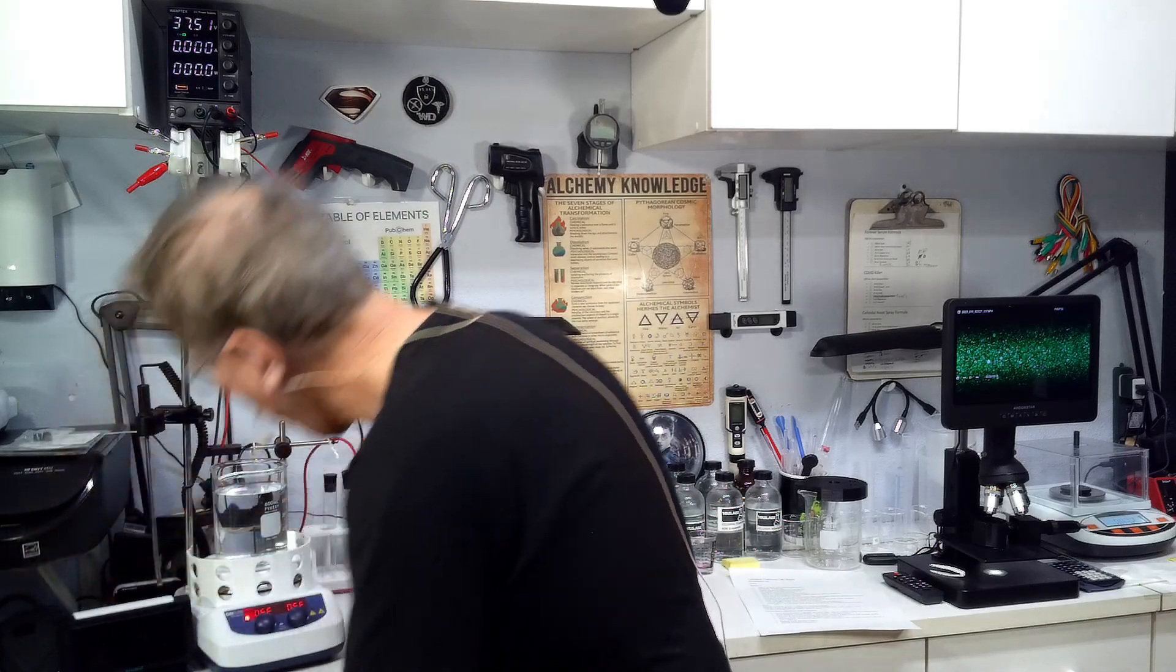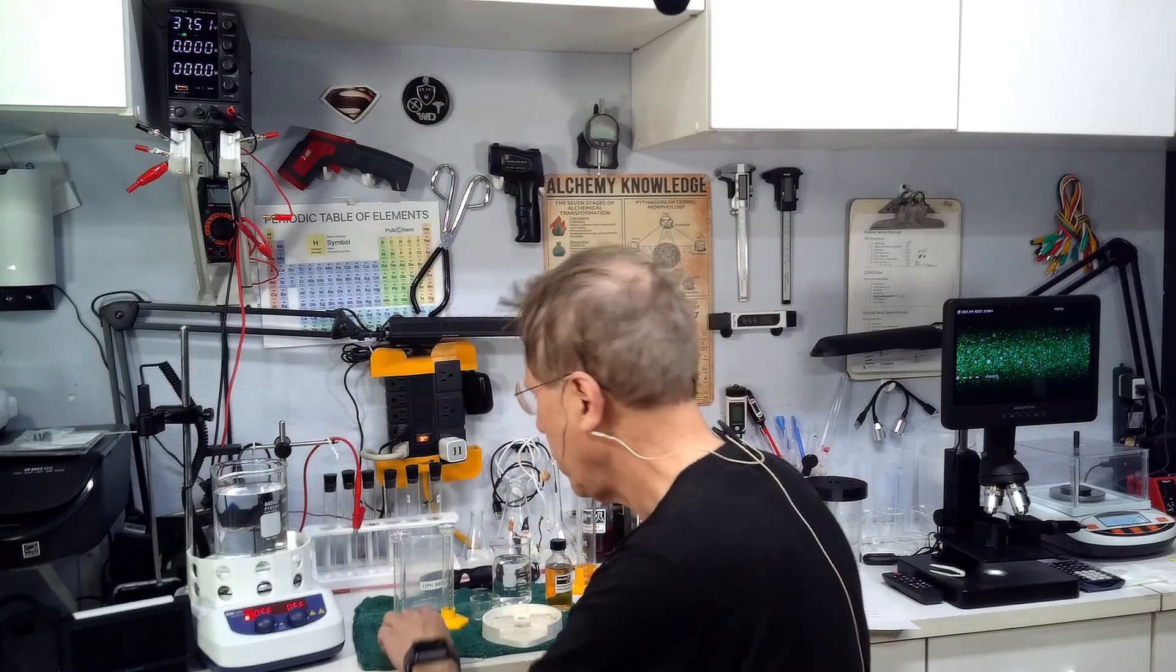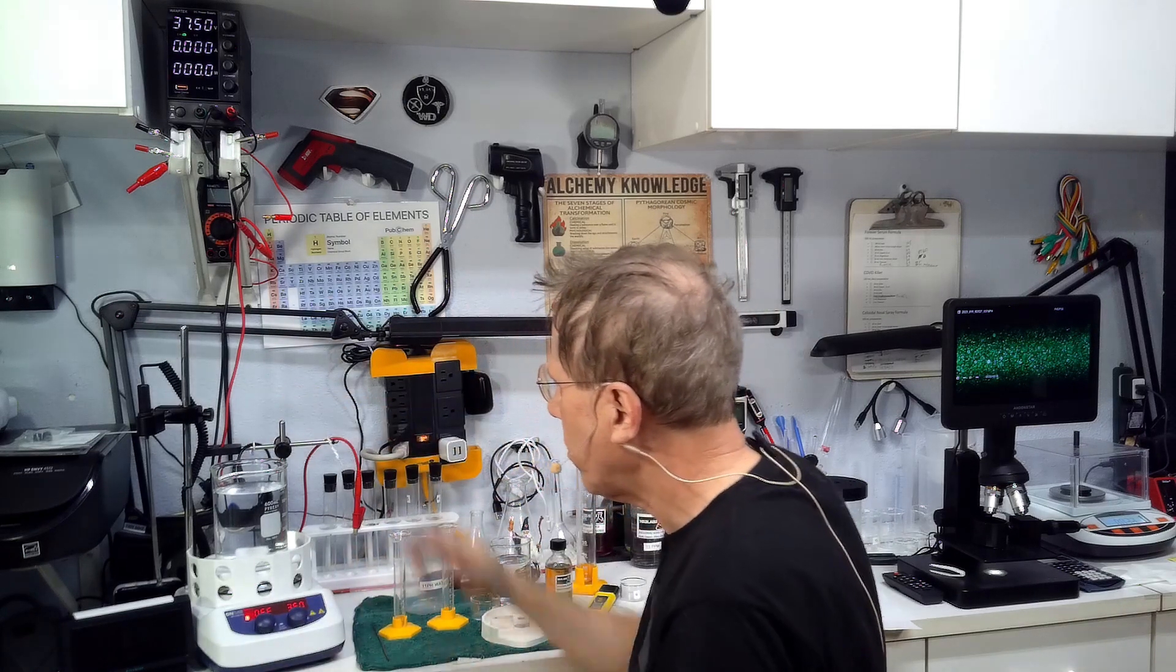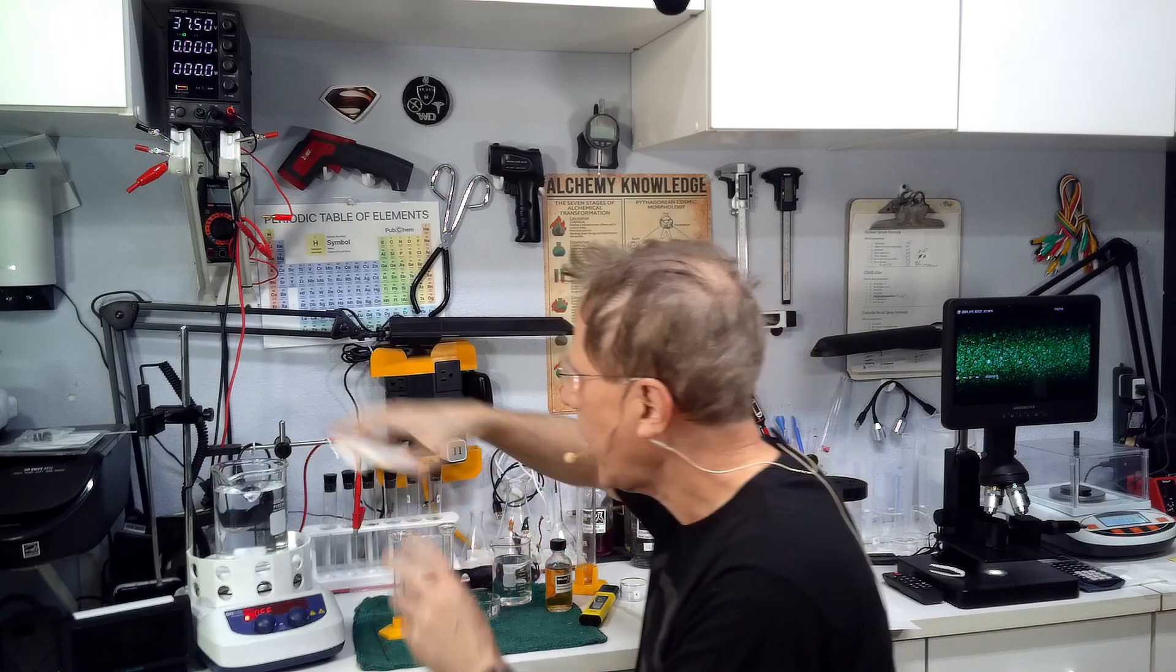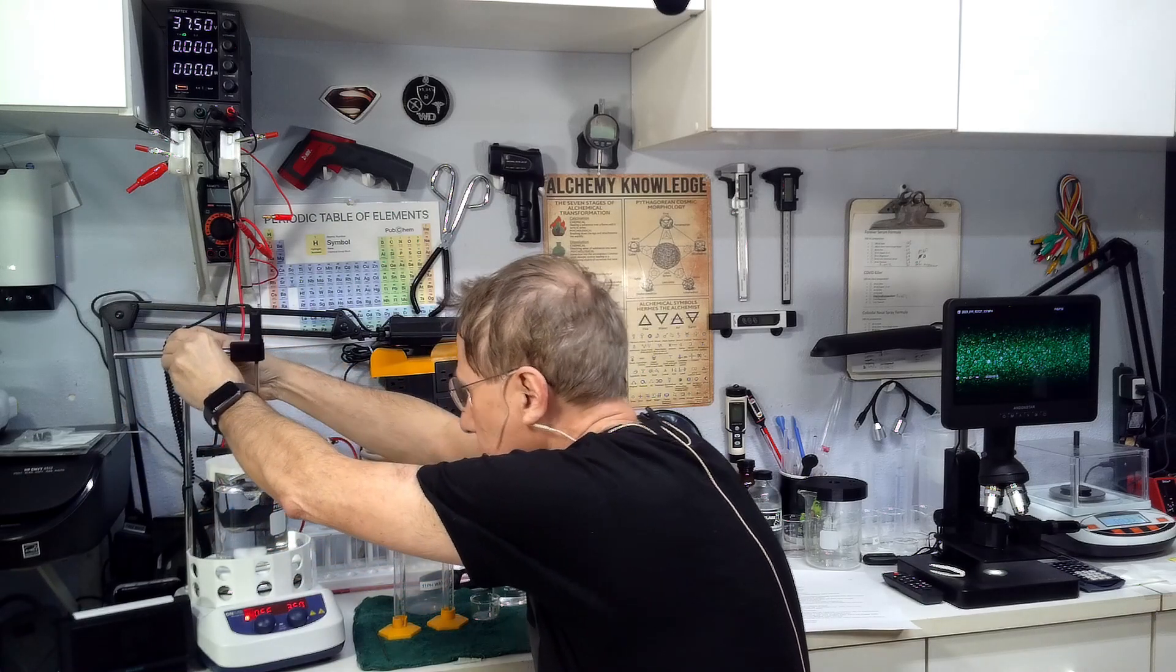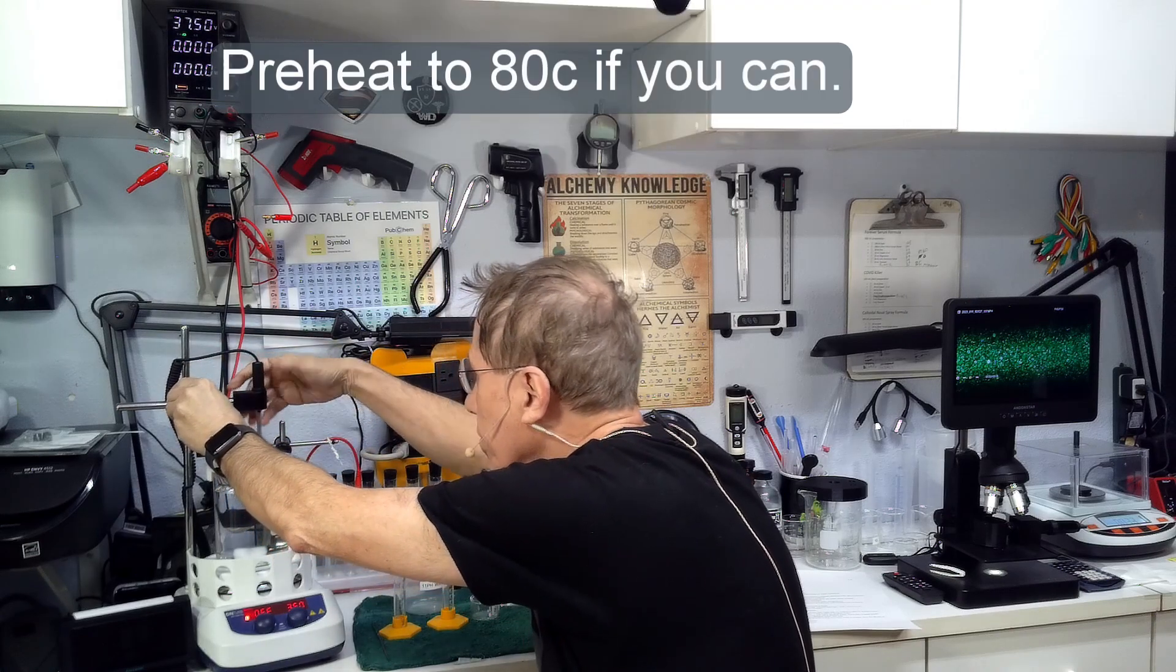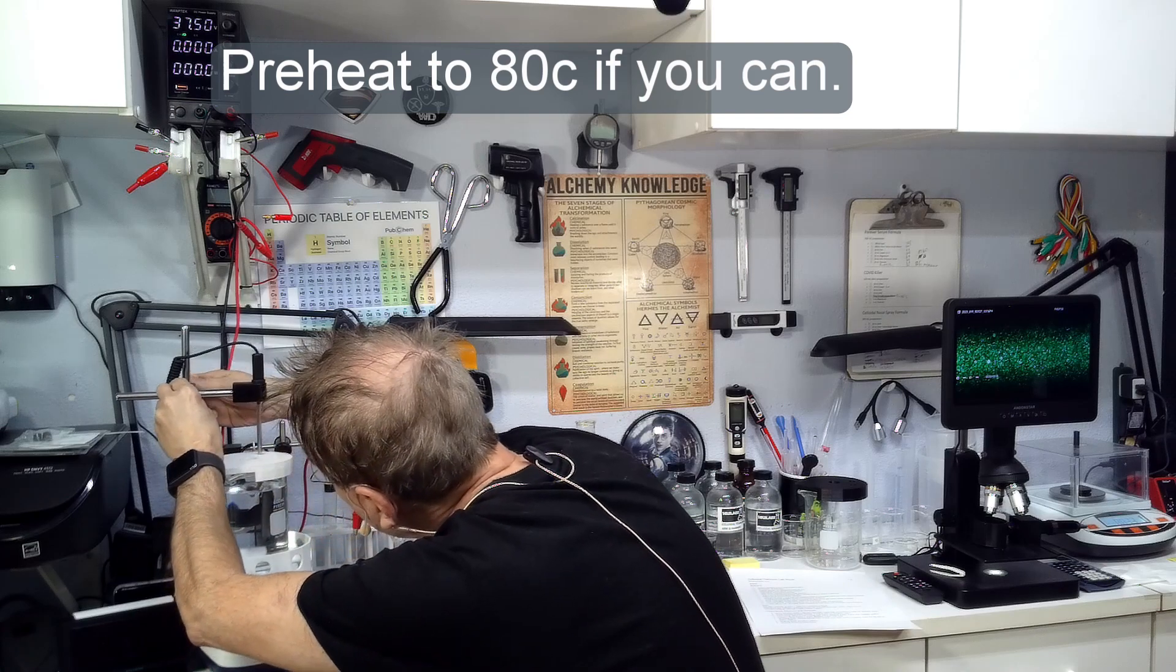We're going to fill our stirrer beaker with 500 milliliters of fluid. I'm going to drop the stirrer in and turn that on. Now I'm going to put my top on here and put my temperature probe in there.